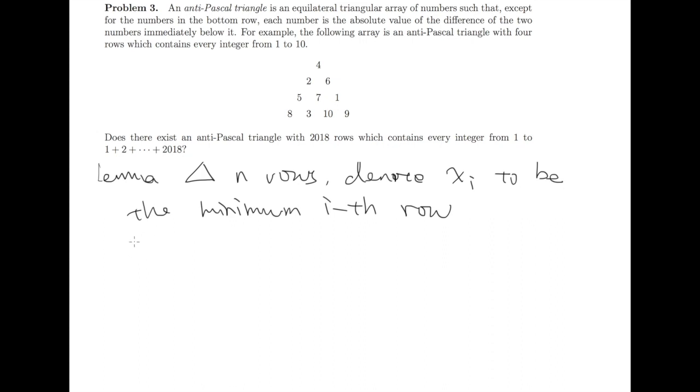The claim is the following: the maximum number among this triangle is larger than the sum of all x_i, which is x_1 plus x_2 plus x_n.